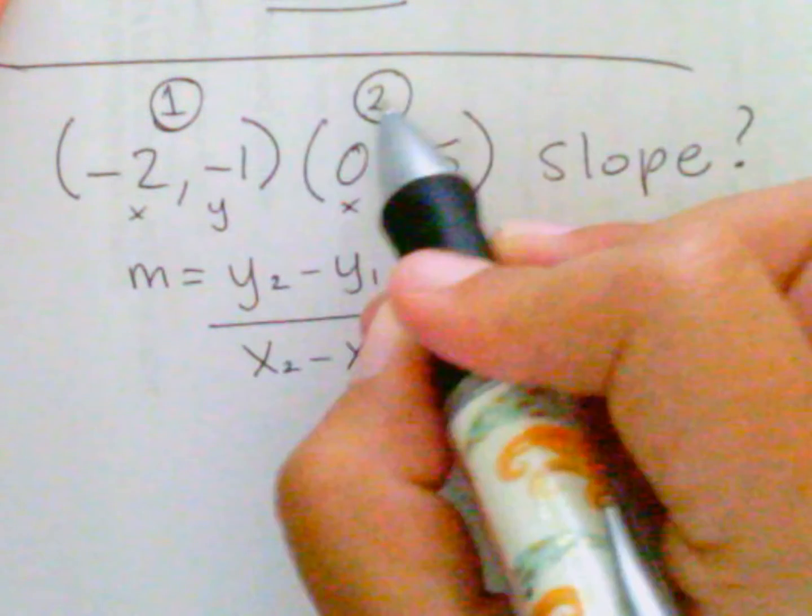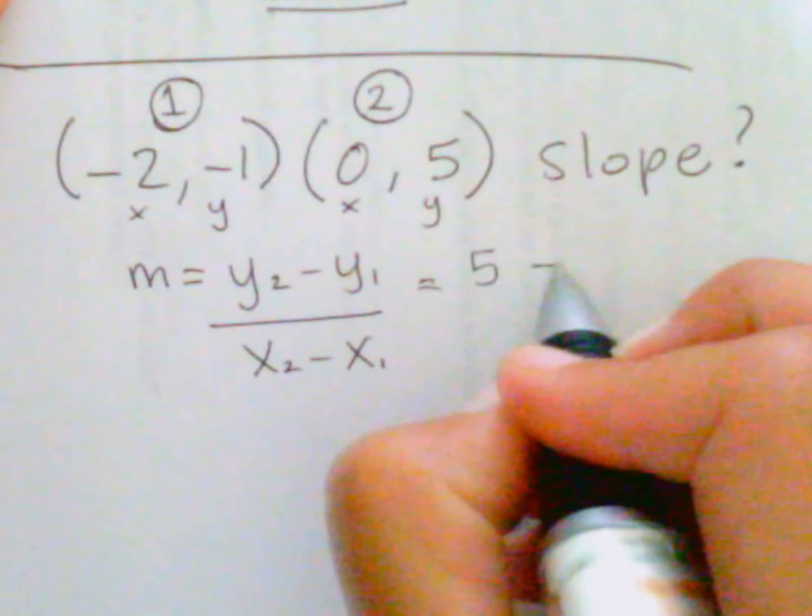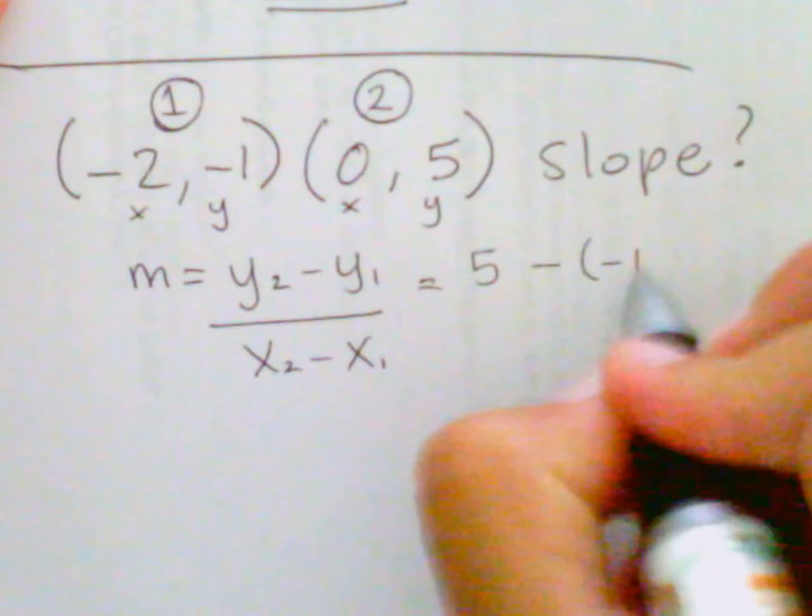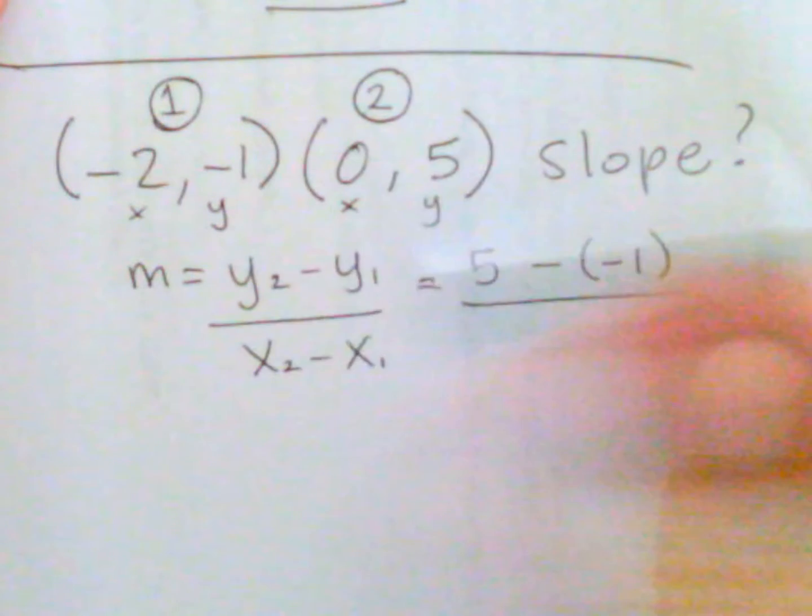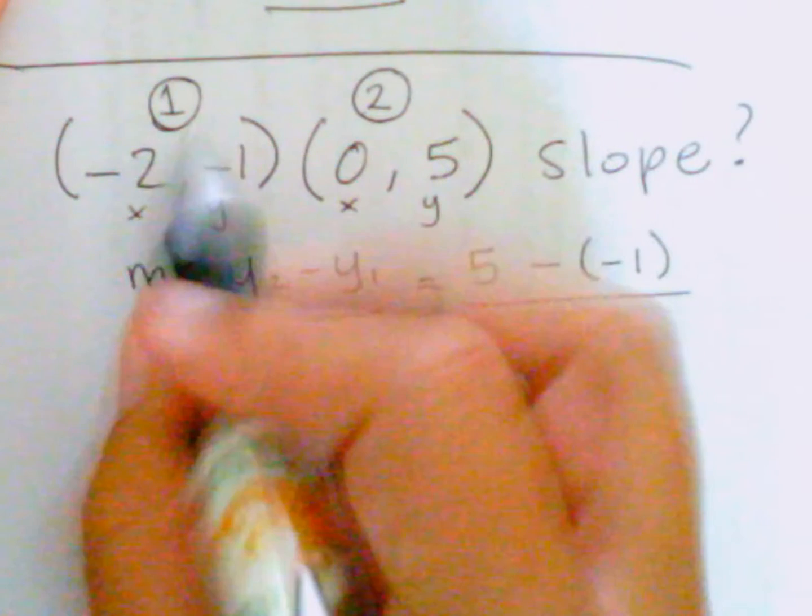So y2, that's going to be the second y, here is 5, minus y1, so here's my first point, which is negative 1, over x2, so my second point, the x value is 0, minus x1 is negative 2.